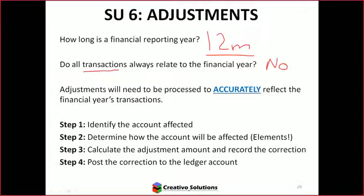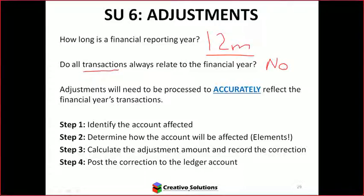How many accounts do we have? Six. And what are the six? Capital, drawings, income, expenses, assets and liabilities. Those are the most important elements. It doesn't matter how basic or advanced the accounting is, you're always going to keep it simple and take it back to its fundamental elements. The elements are key and we'll be applying those here in some of these adjustments.